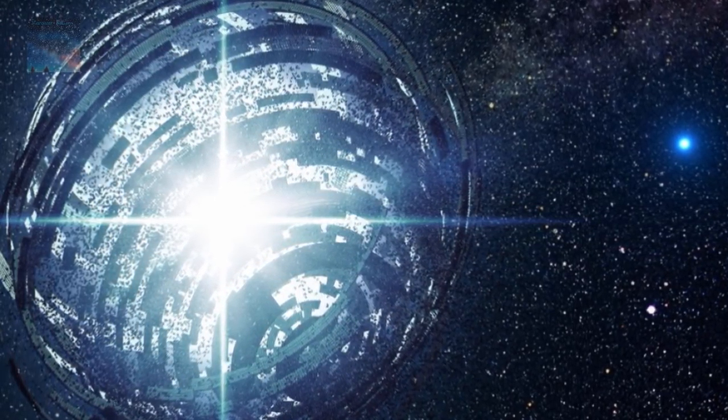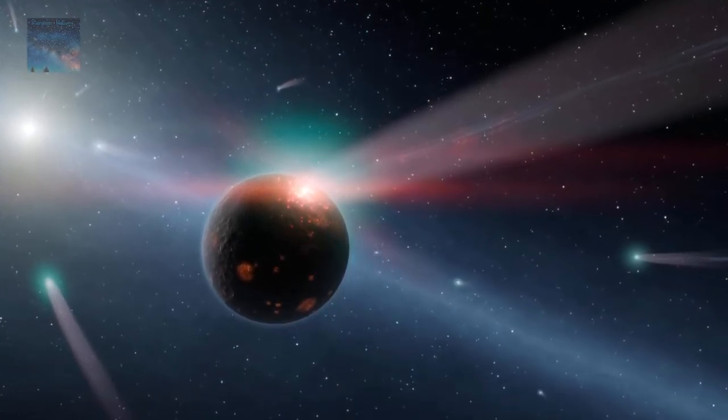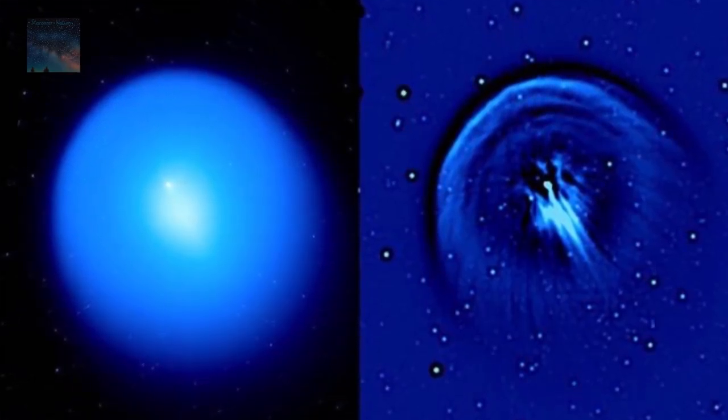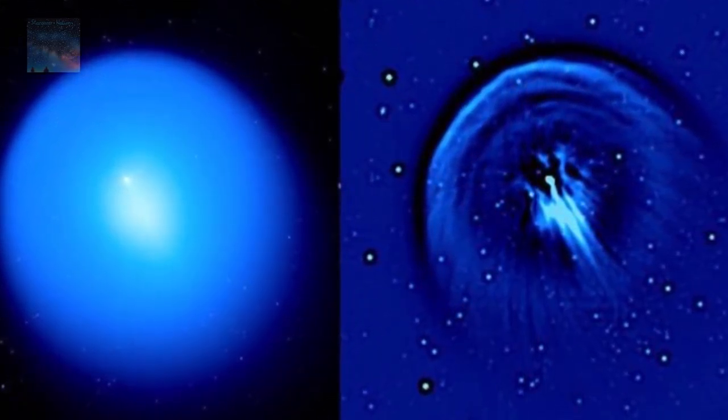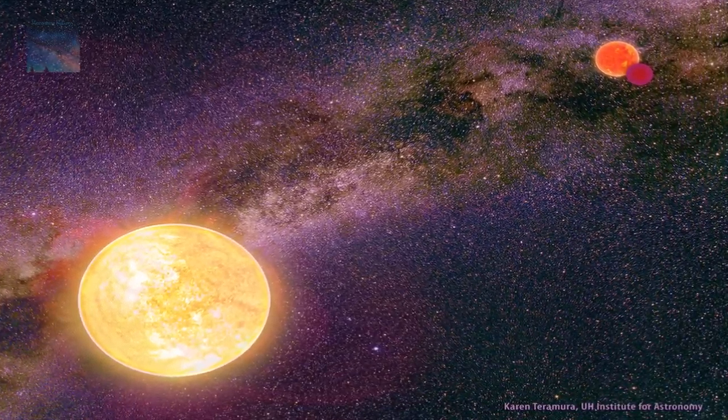But get this. Ruled out is the possibility of a large batch of comets. Ruled out is a shattered super planet like Jupiter blocking light and ruled out is the double star system phenomenon.